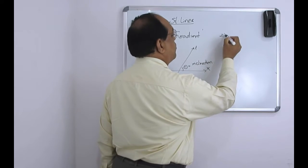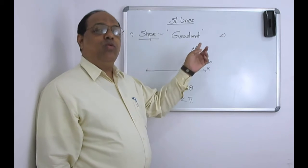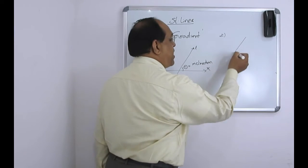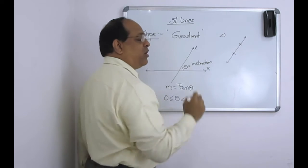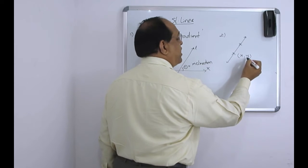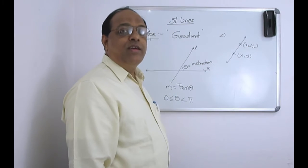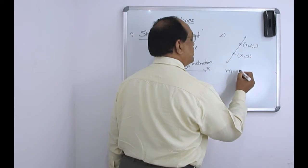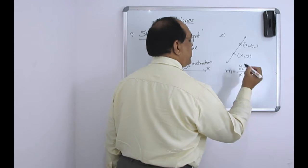My second point is: when the angle is given, how to find the slope — that is the definition of slope I just explained. Similarly, if a straight line is passing through two points x1, y1 and x2, y2, then the slope is (y2 minus y1) by (x2 minus x1).